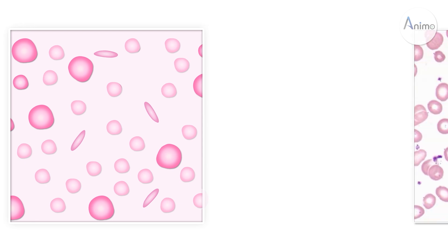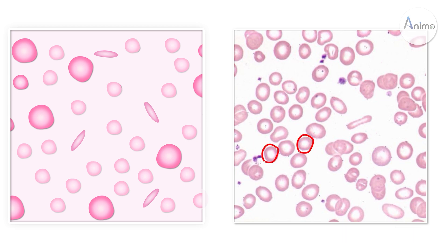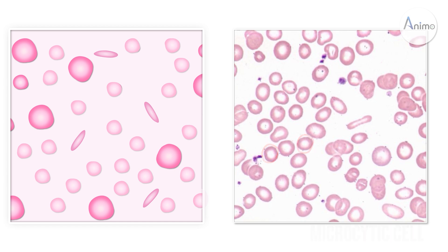Here you can see the real image — this is what a real histological slide of iron deficiency anemia looks like. This one here is the normal RBC, and these are the small hypochromic microcytic cells, and these are the pencil cells.